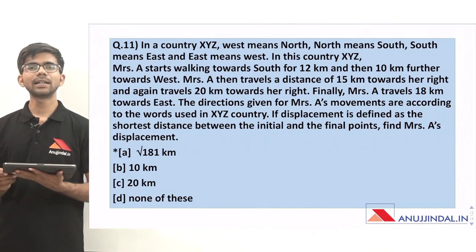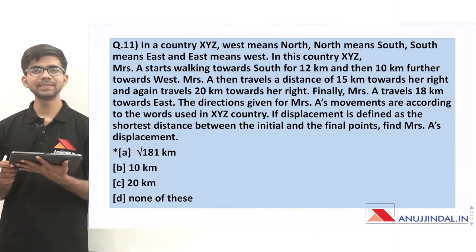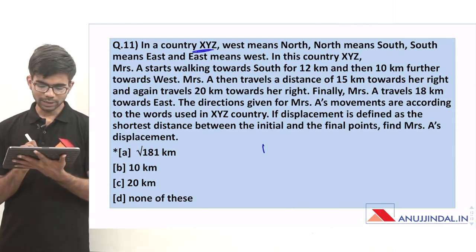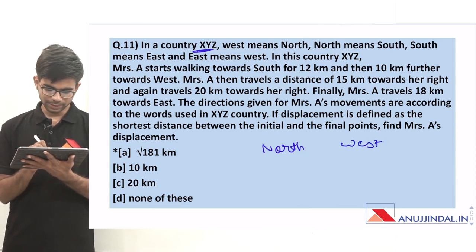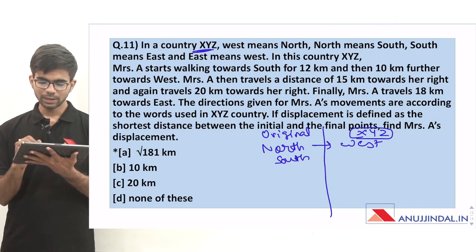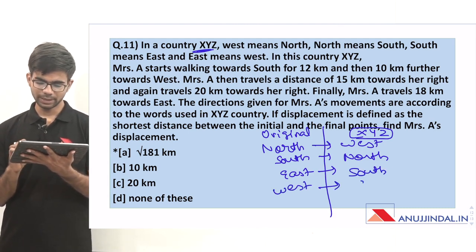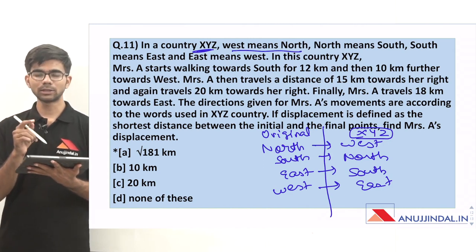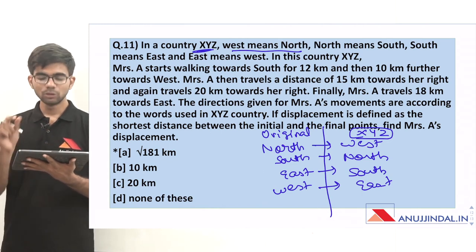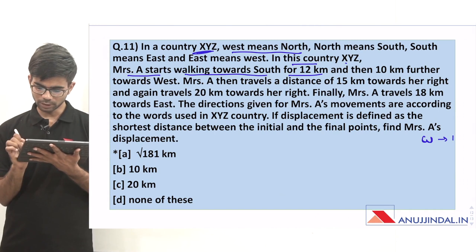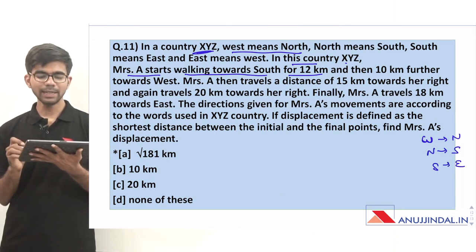Question 11: In country XYZ, west means north, north means south, south means east, and east means west. This means north direction is called west, south direction is called north, east direction is called south, and west direction is called east. Students often confuse this — west means north means that in country XYZ, the north direction is called by the name west.